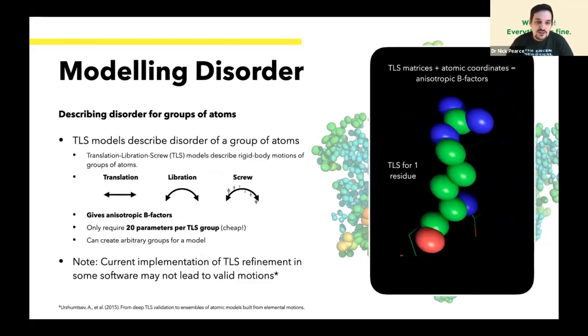There's another way of describing disorder that is commonly used in macromolecular crystallography, and this is the TLS model of disorder. TLS models are a really good way to generate a set of anisotropic B-factors for an entire group of atoms. This enables us to describe our data anisotropically. The advantage of TLS models is that we can define an arbitrary group of atoms and describe the rigid body motion of that group generating anisotropic disorder components for all of those atoms simultaneously using only 20 parameters per group.